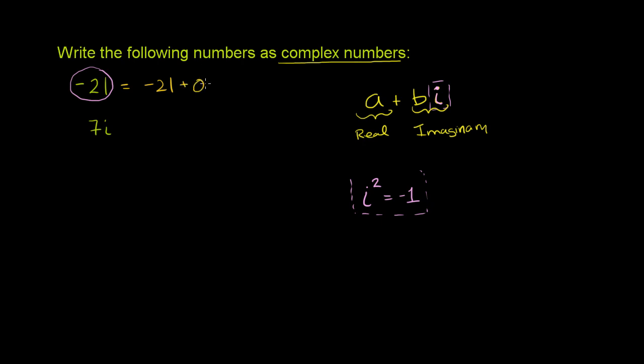plus 0 times i. 0 times i is 0, so it's still just going to be negative 21. We have no imaginary part really. So this is just a complex version of it. Very straightforward.